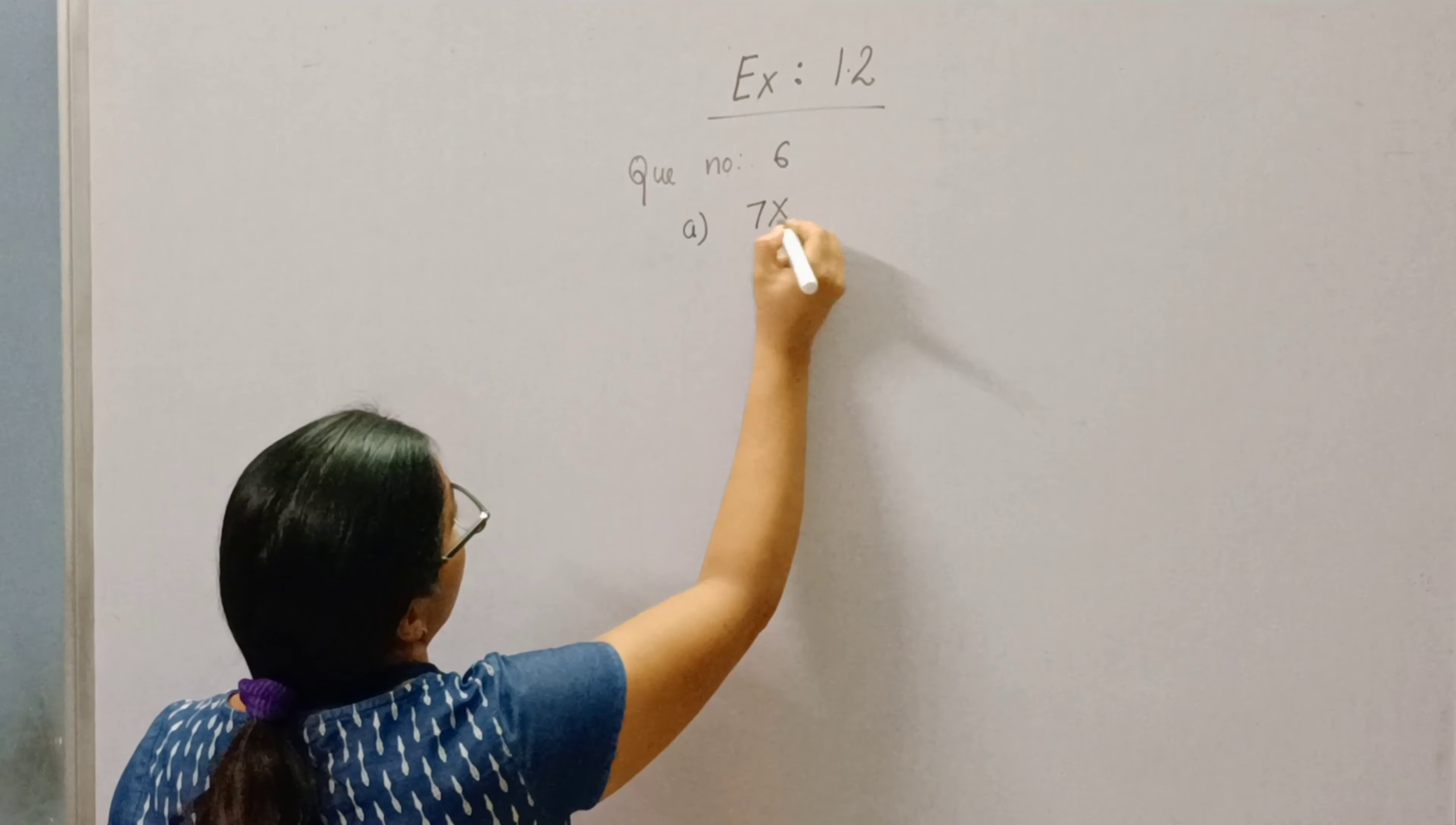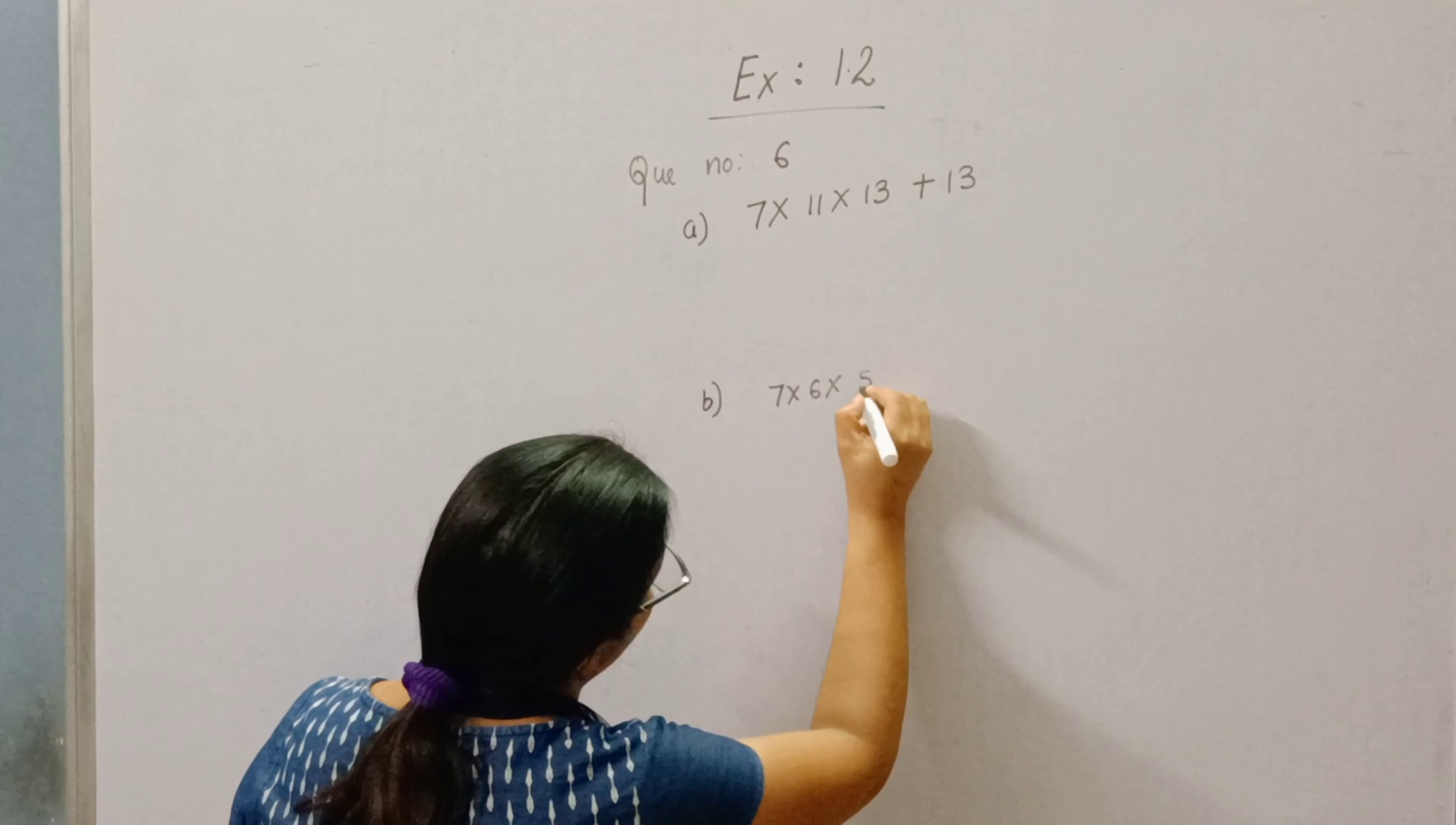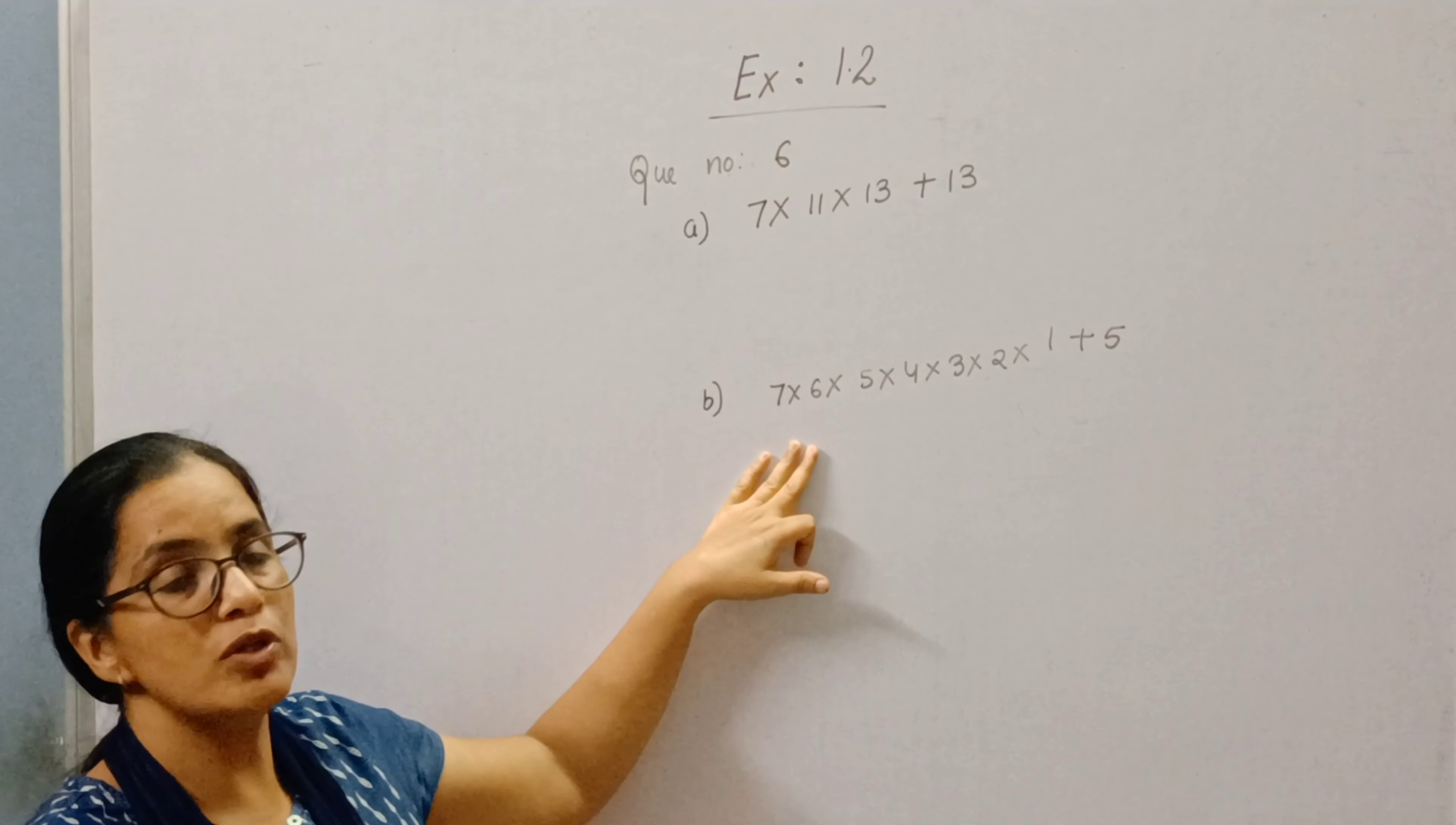7 into 11 into 13 plus 13 is a composite number. And second one is 7 into 6 into 5 into 4 into 3 into 2 into 1 plus 5. You have to prove both these numbers are composite numbers. This is our question. We have to prove that these numbers are composite numbers.